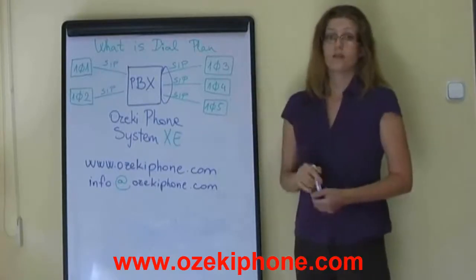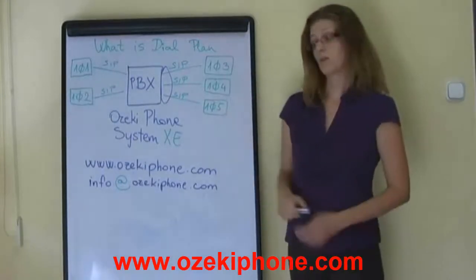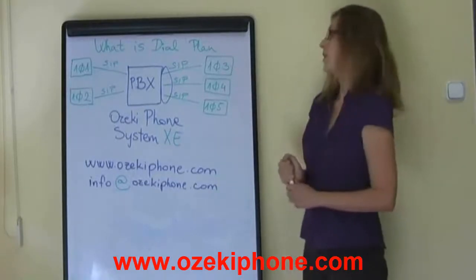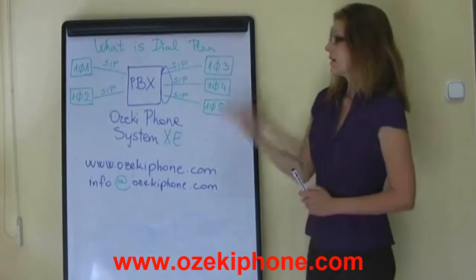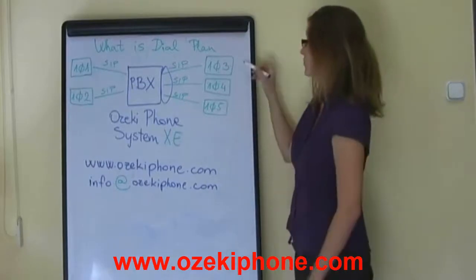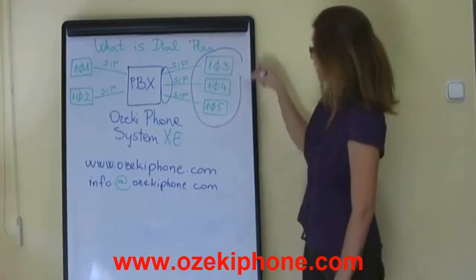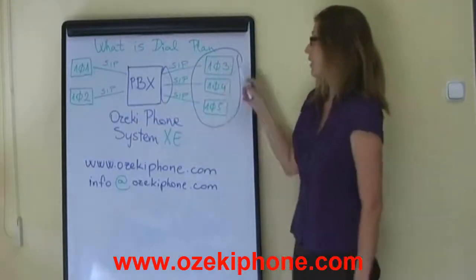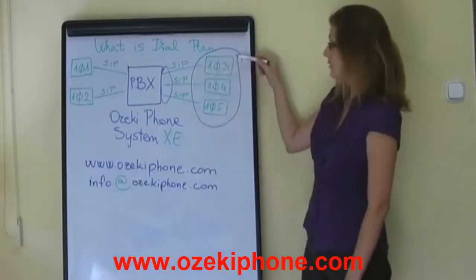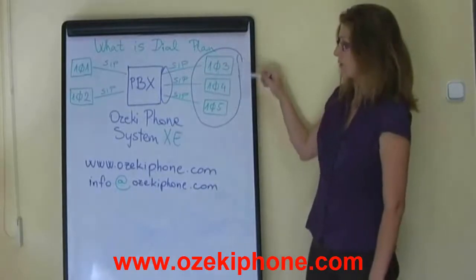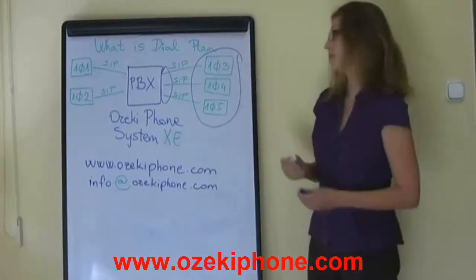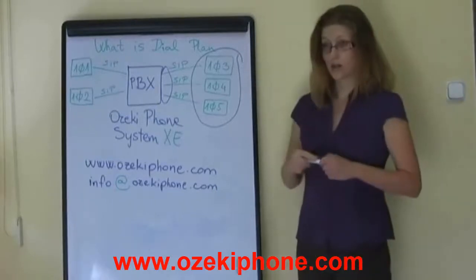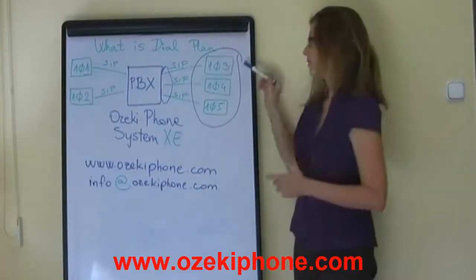You can define how many rings the PBX waits before jumping to the next number. Or you can even define groups: when you are dialing 103, the PBX can ring all three — 103, 104, and 105 extensions — and if any of these extensions answer the phone, the others stop ringing.